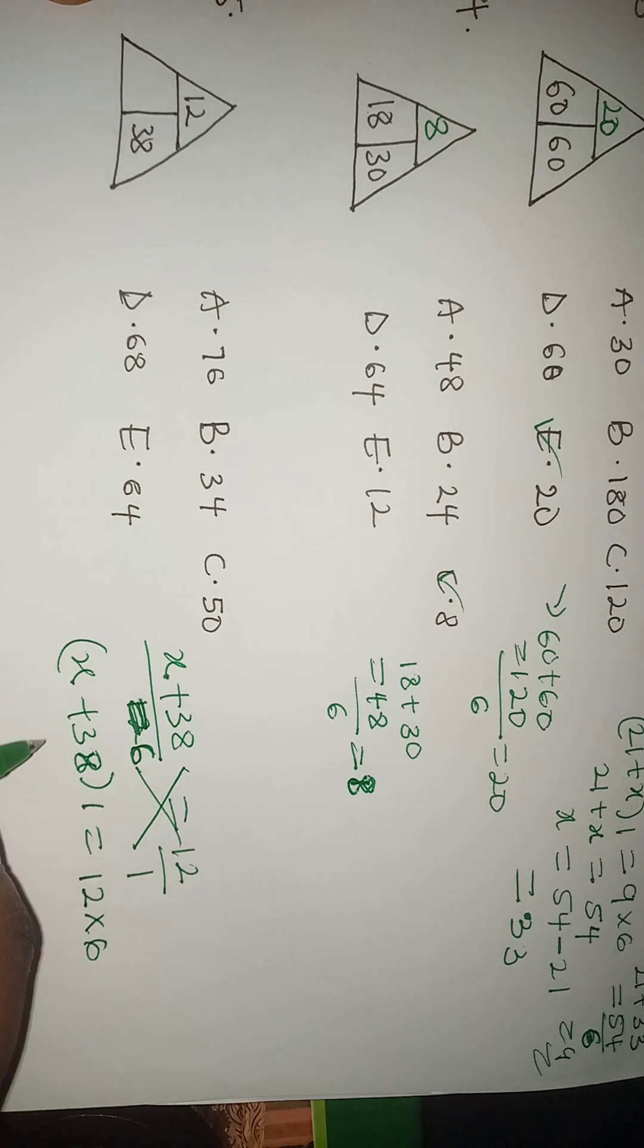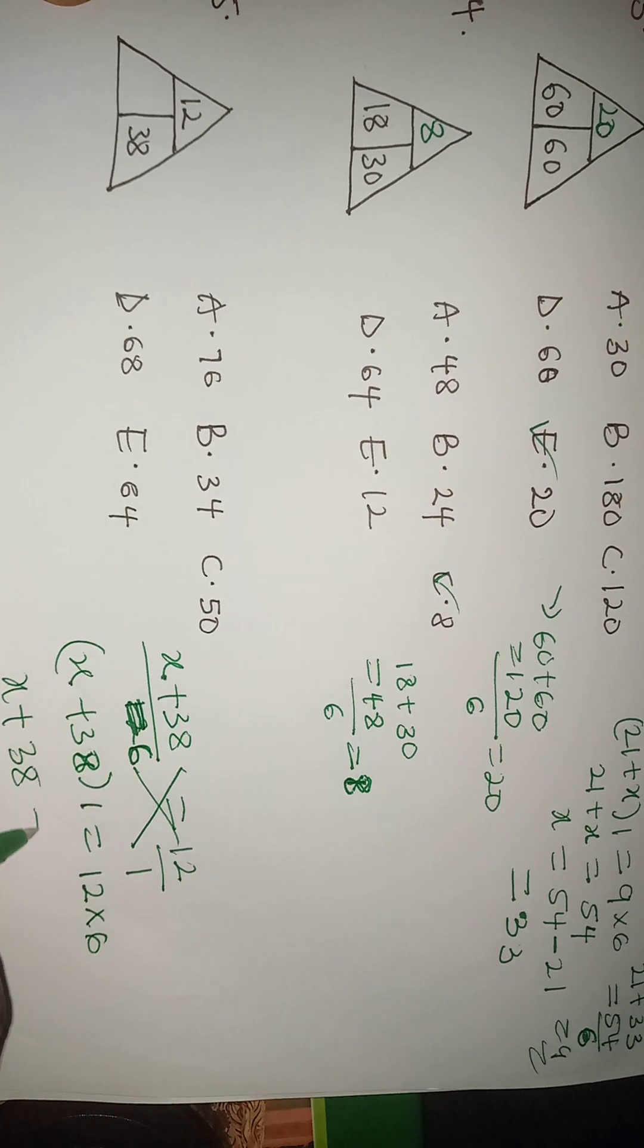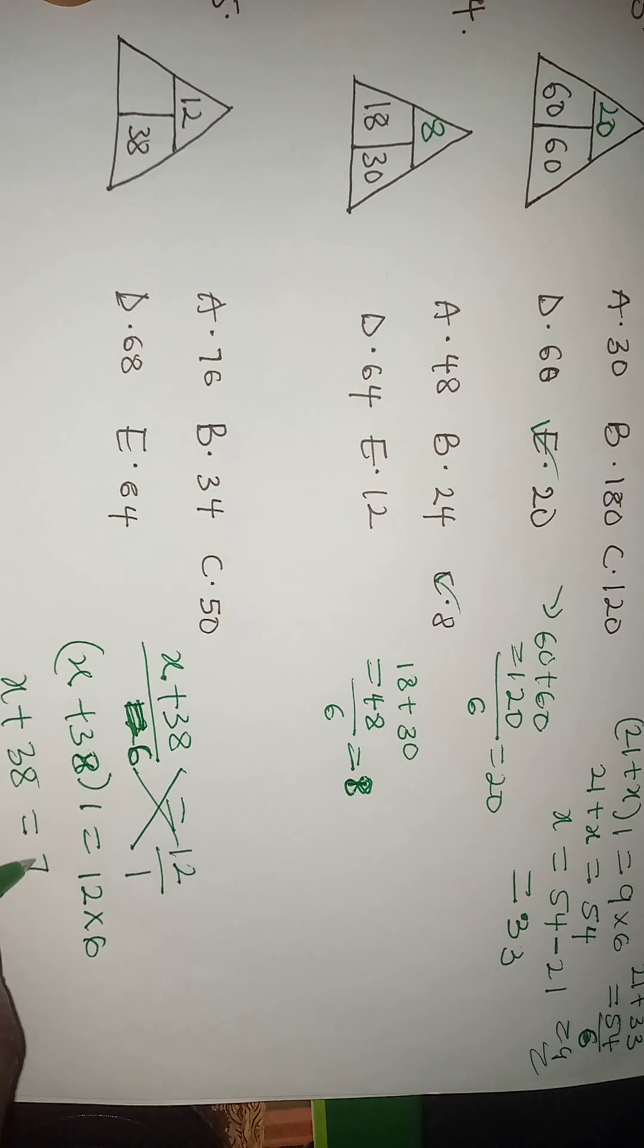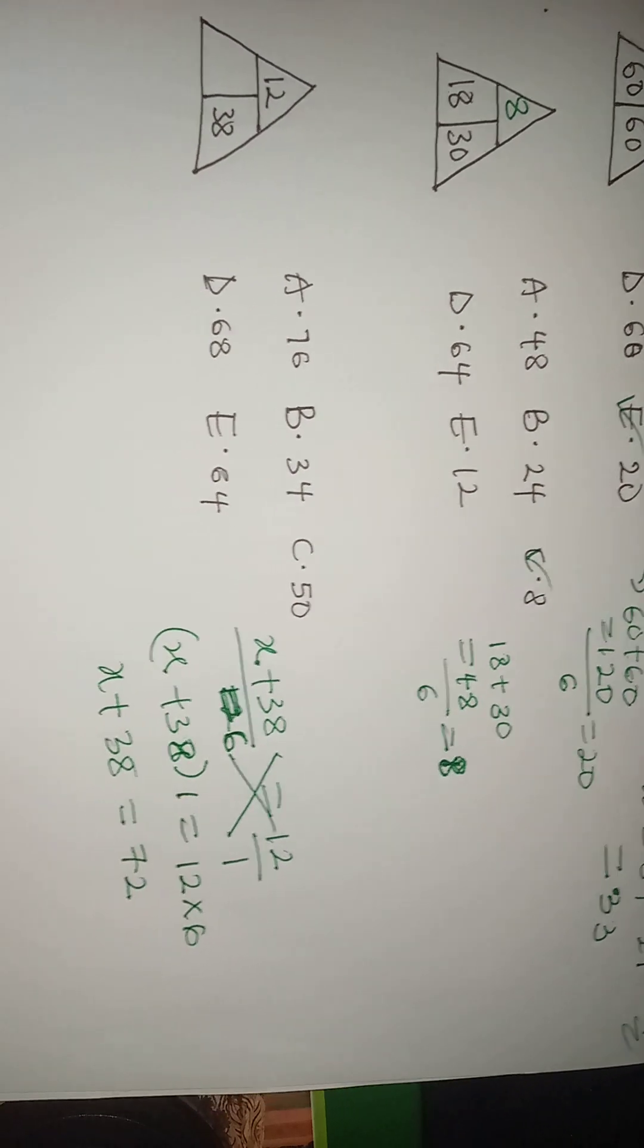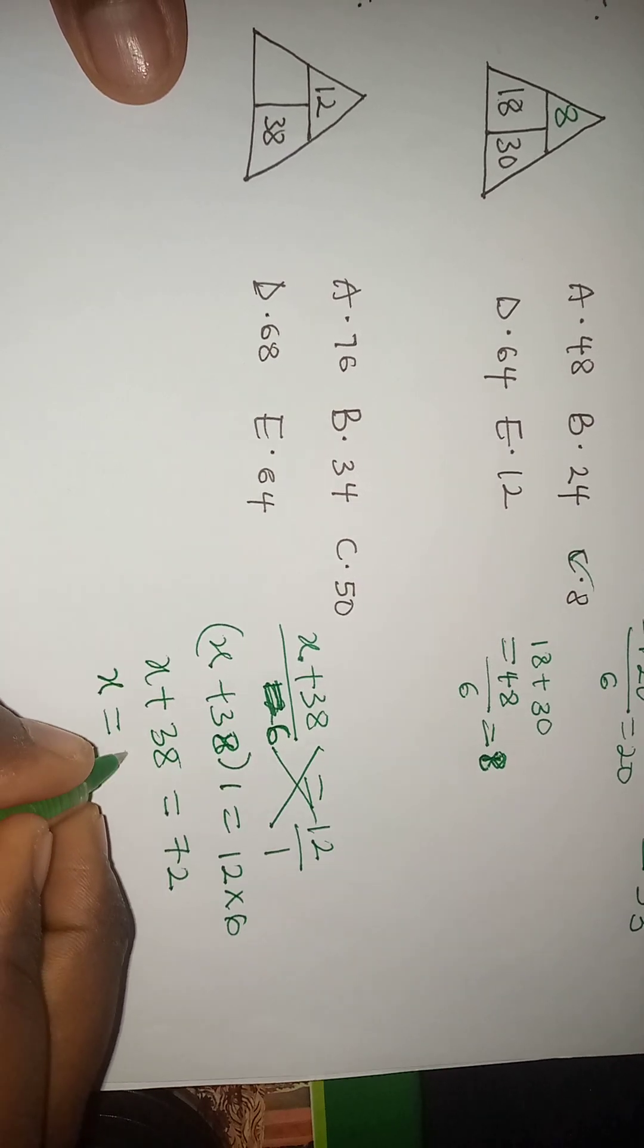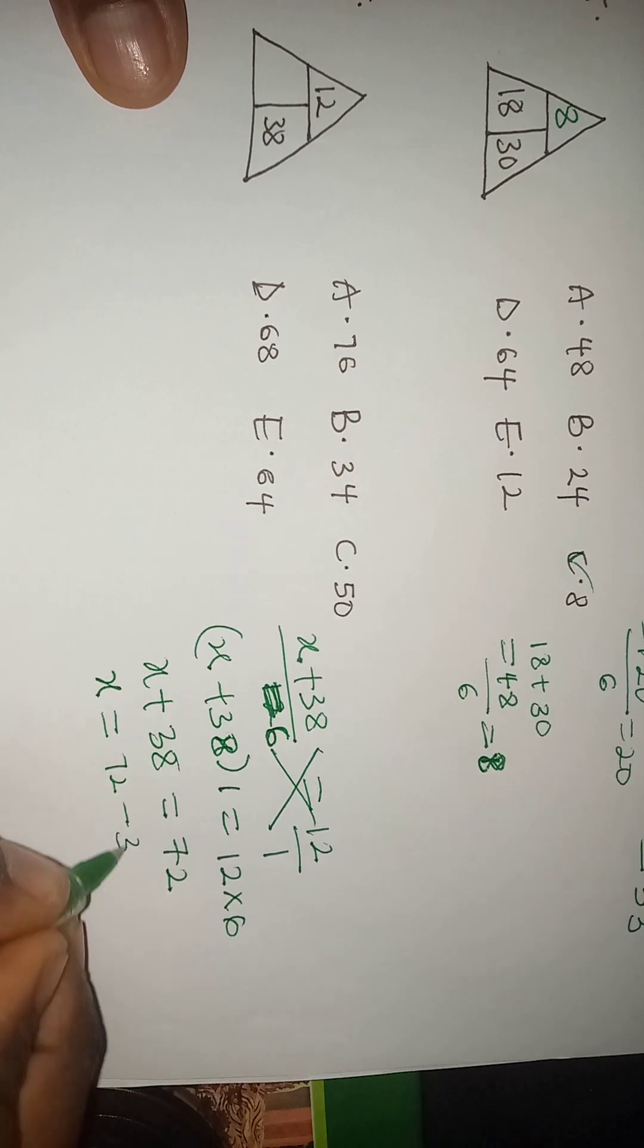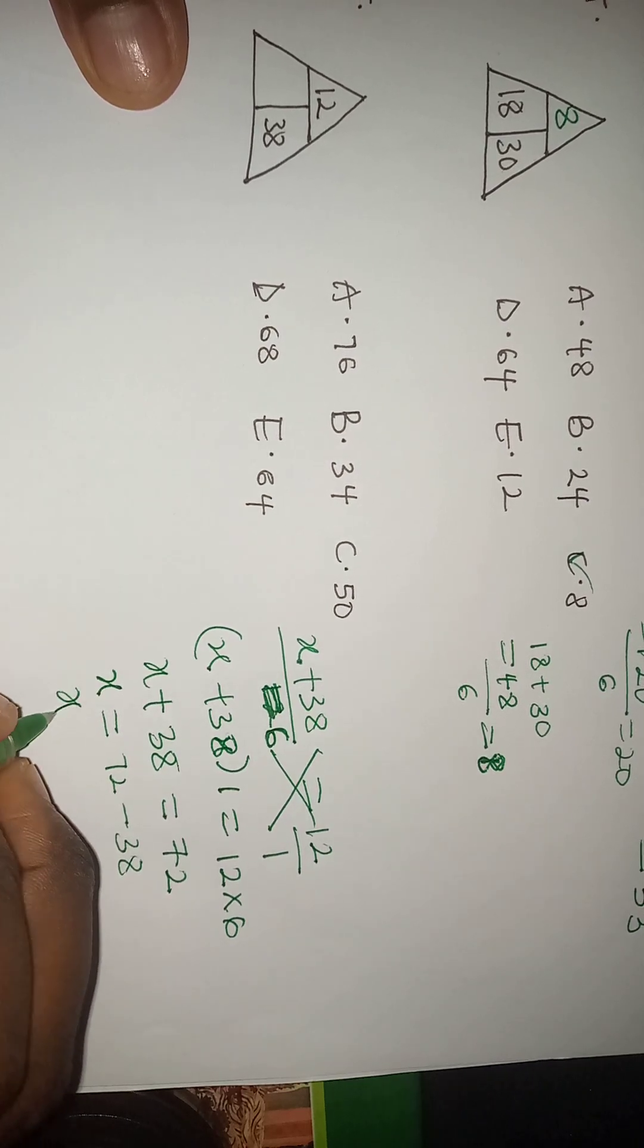Which is equal to X plus 68 is equal to 12 times 6 is 72. Then we make X alone which is 72. Once 68 goes to this place, it becomes minus 68.